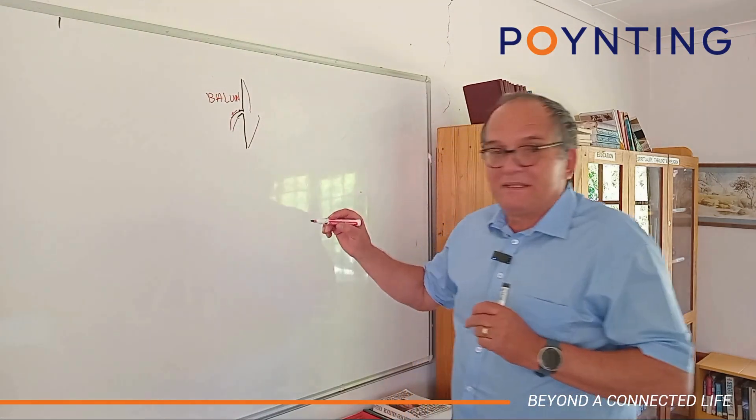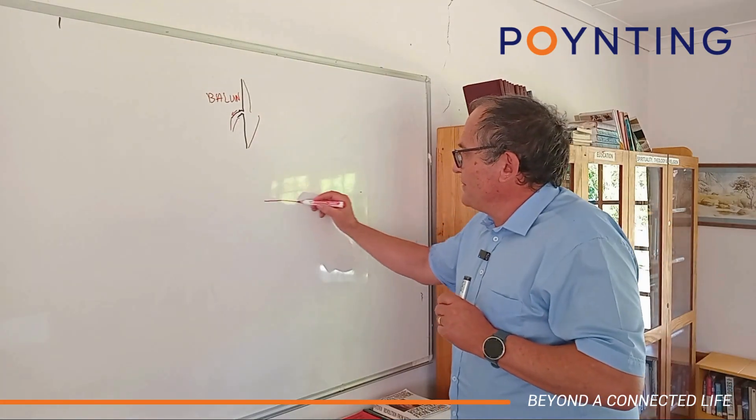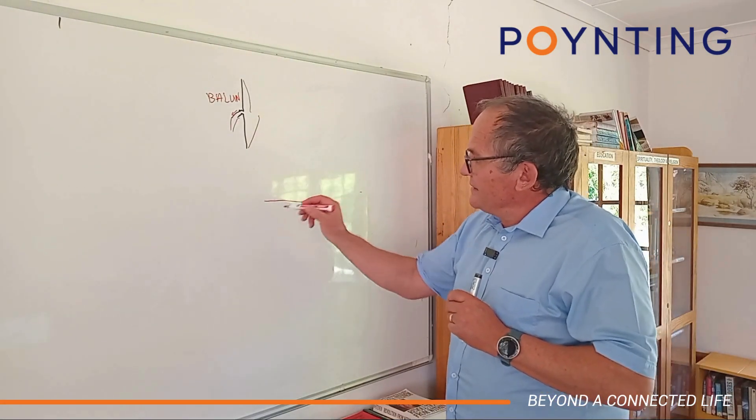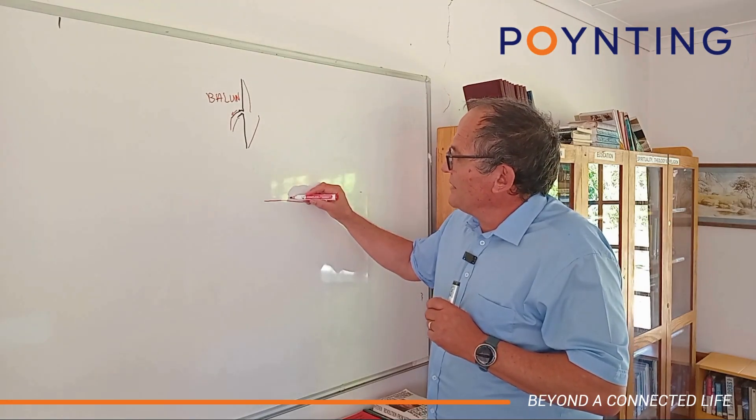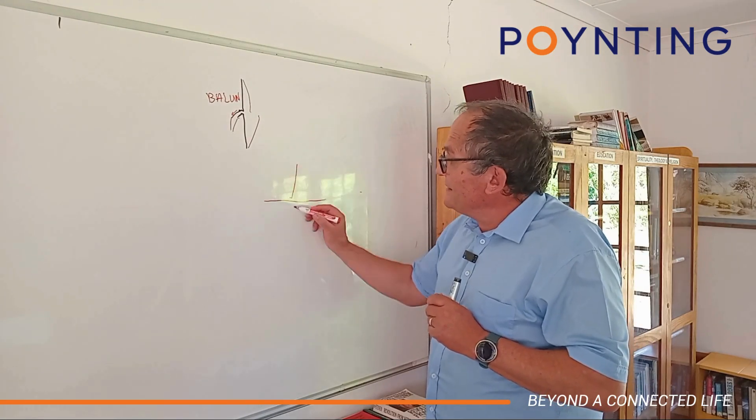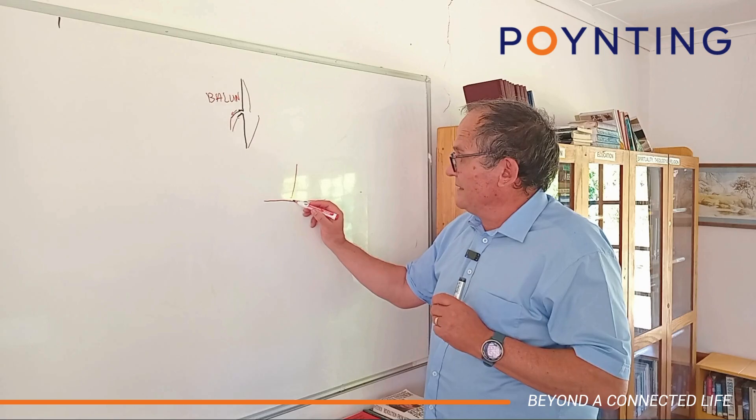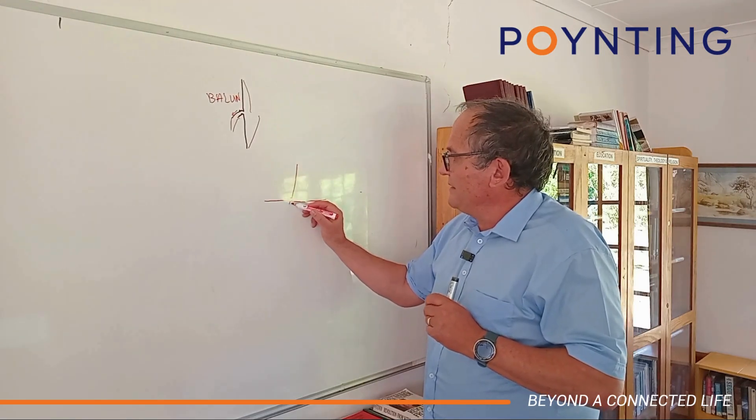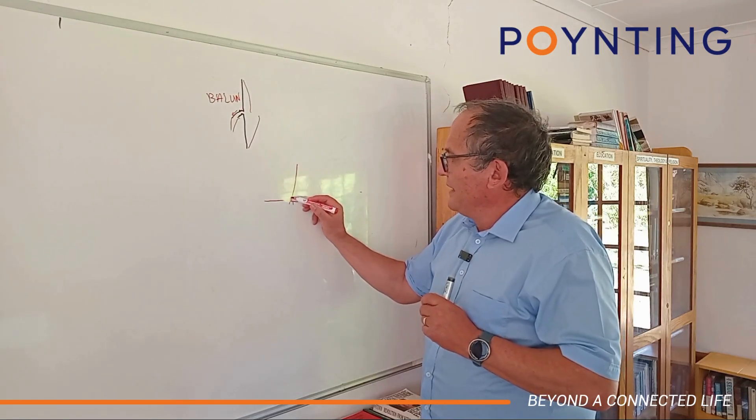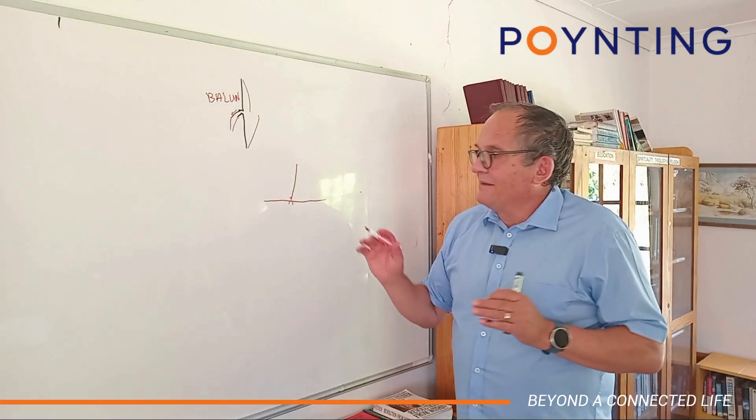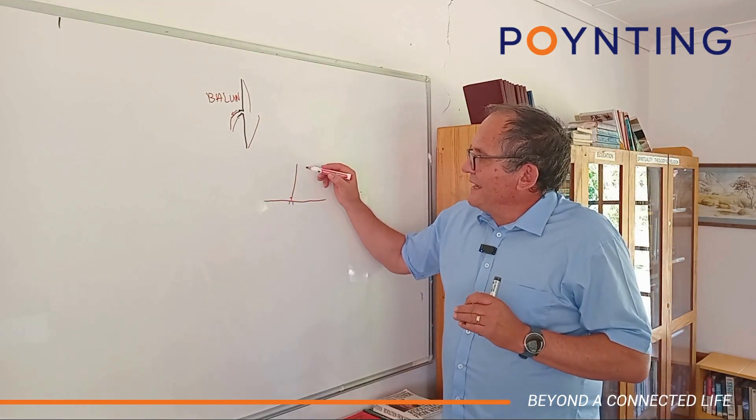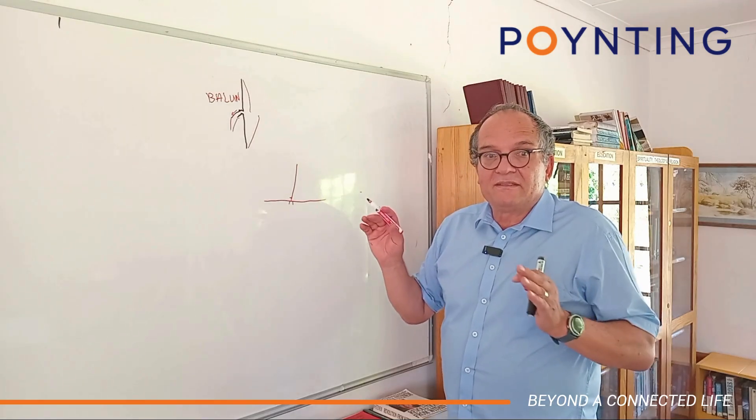But if you've got that, why is it better than a monopole? A monopole antenna uses this mirror that we talked about and it does only one half of this guy. Doesn't need a balun because it's not balanced. The braid of the coax goes to this guy and the inner goes to that guy, no problem, don't need baluns.